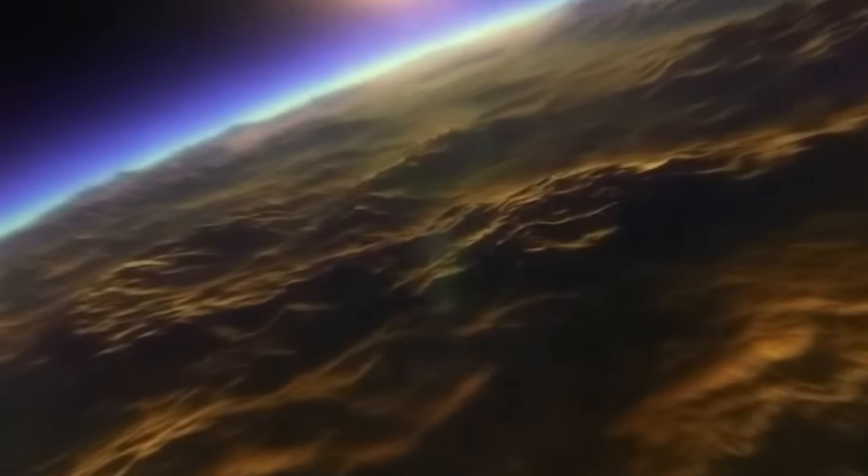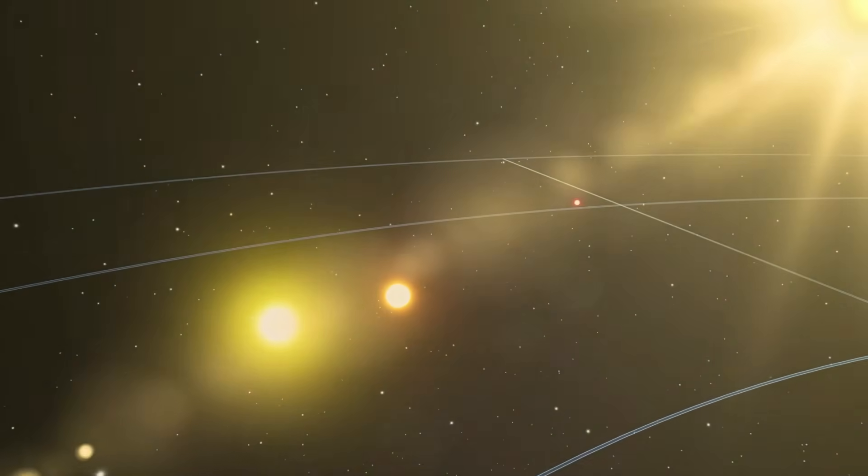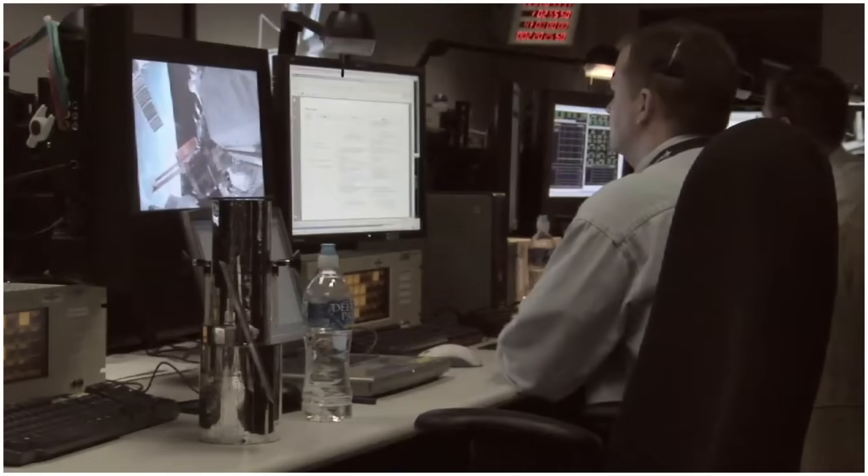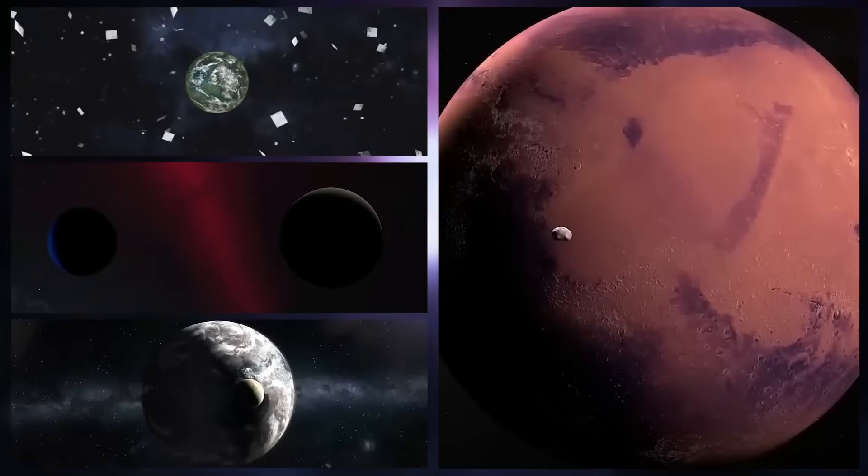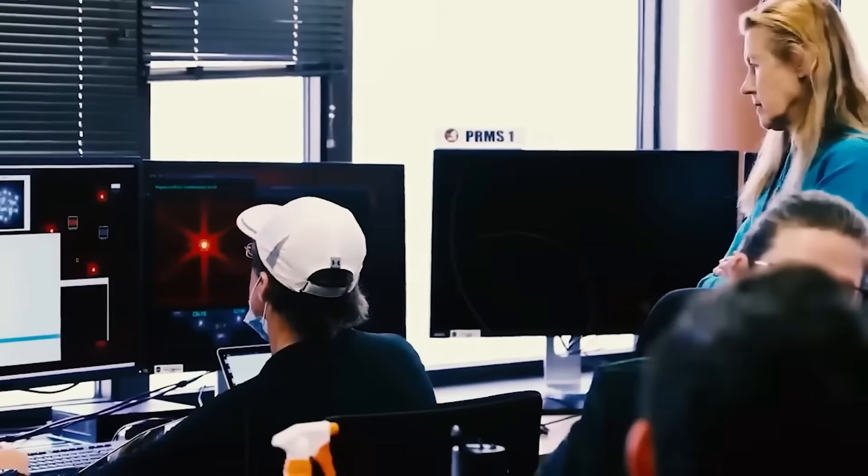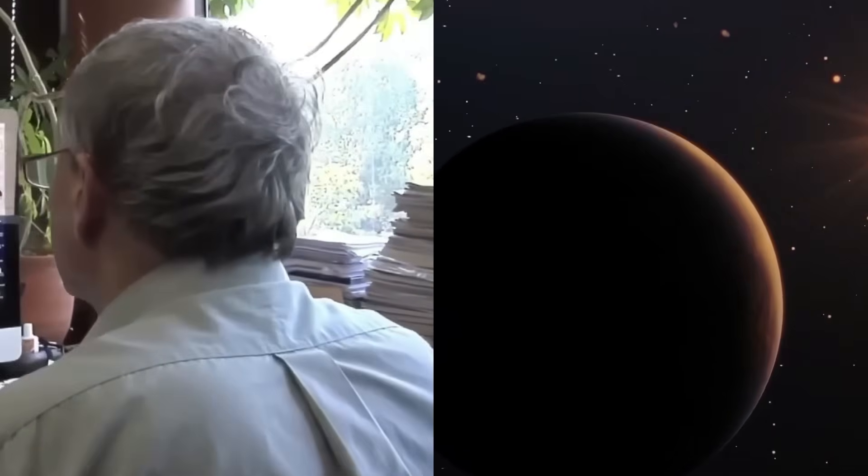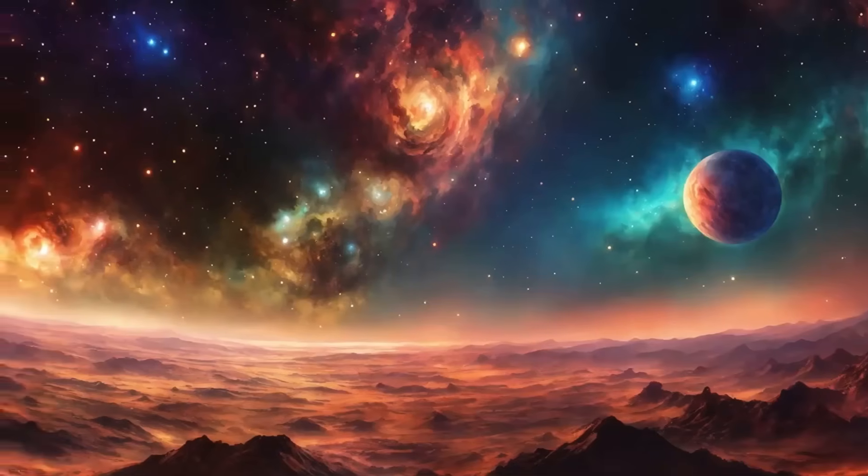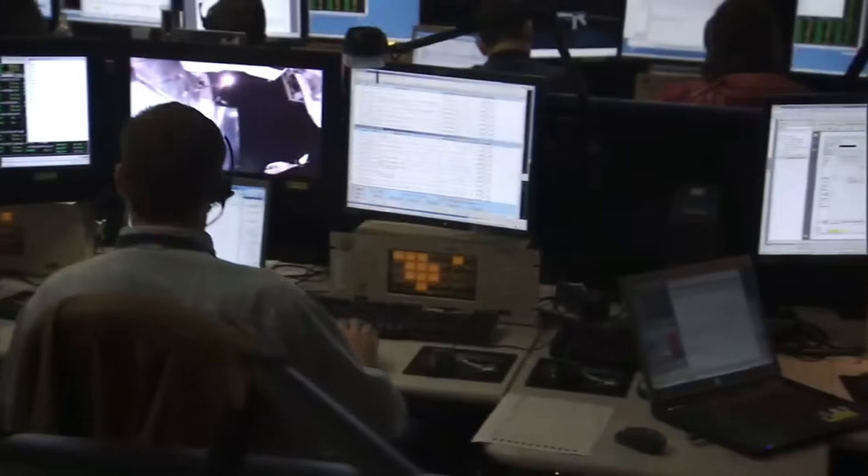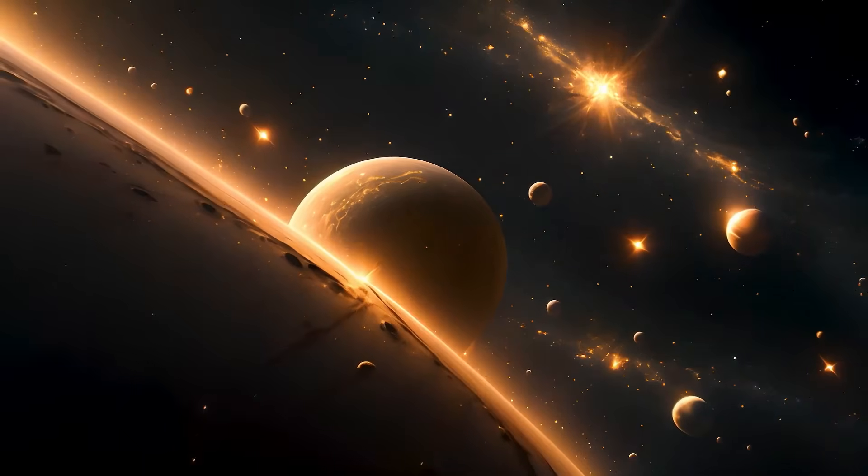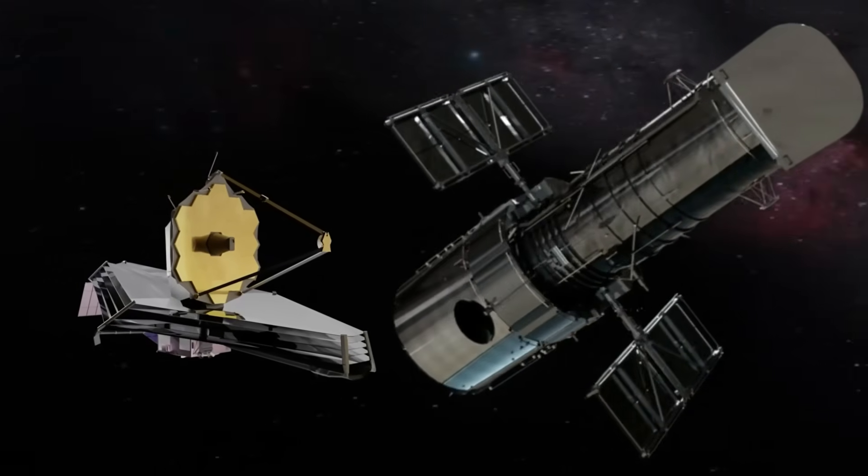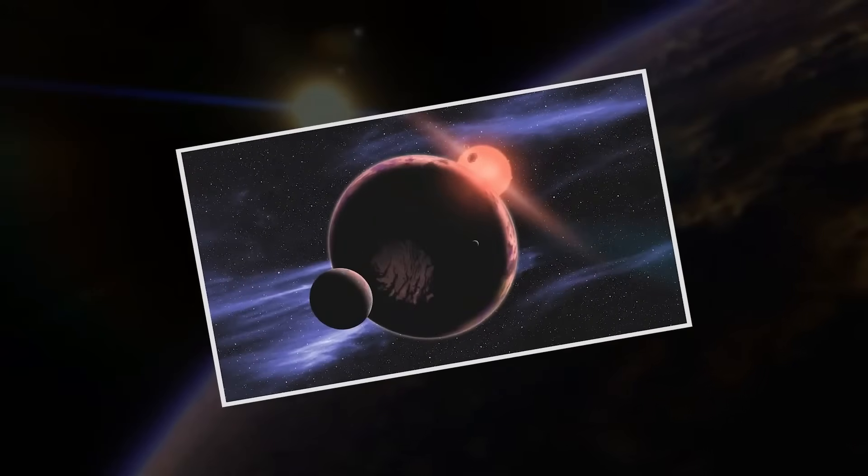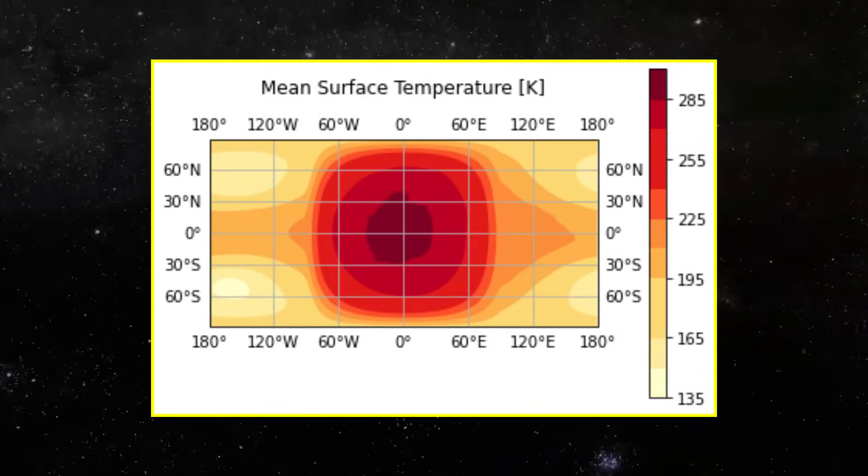With new data pouring in, scientists have begun narrowing down possible explanations for the anomaly. While no definitive answer has emerged, three leading theories are currently being explored. Each one challenges existing models of planetary geology and could reshape how we understand rocky exoplanets. 1. Unidentified Geological Structure. The most straightforward explanation is that this is a type of planetary formation never before observed. However, this theory is already facing challenges. The structure's heat retention is far greater than any known rock formations, which typically cool at a predictable rate. Its reflective properties suggest a surface material that is highly unusual for a rocky exoplanet. No existing planetary models predict the formation of such a structure under Proxima b's conditions. If this explanation holds, it would require rethinking how extreme environments near red dwarf stars shape planetary surfaces.